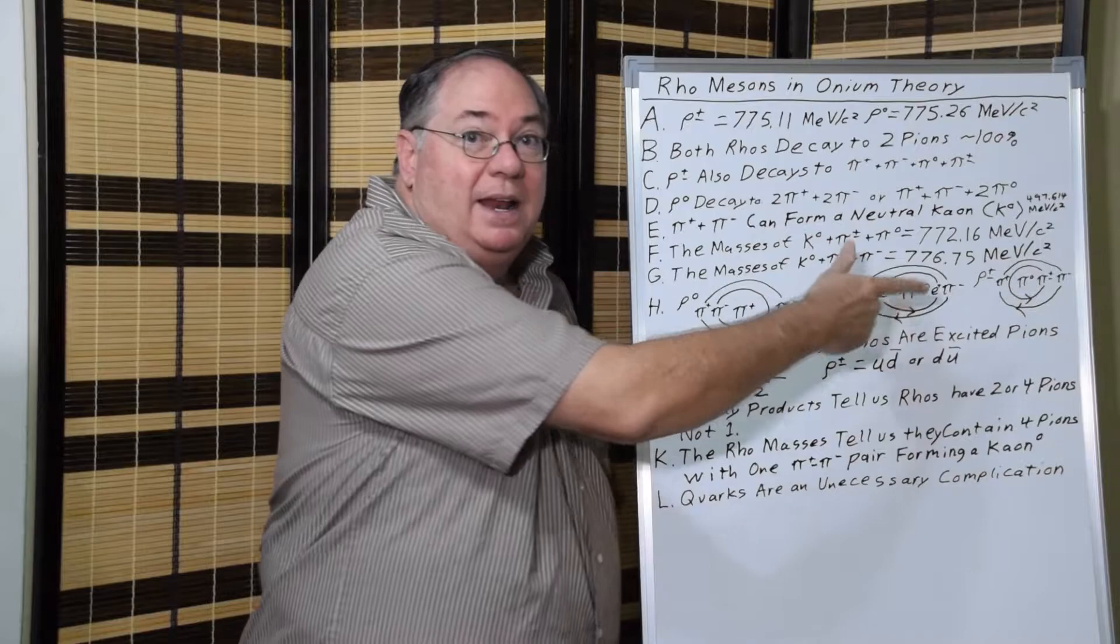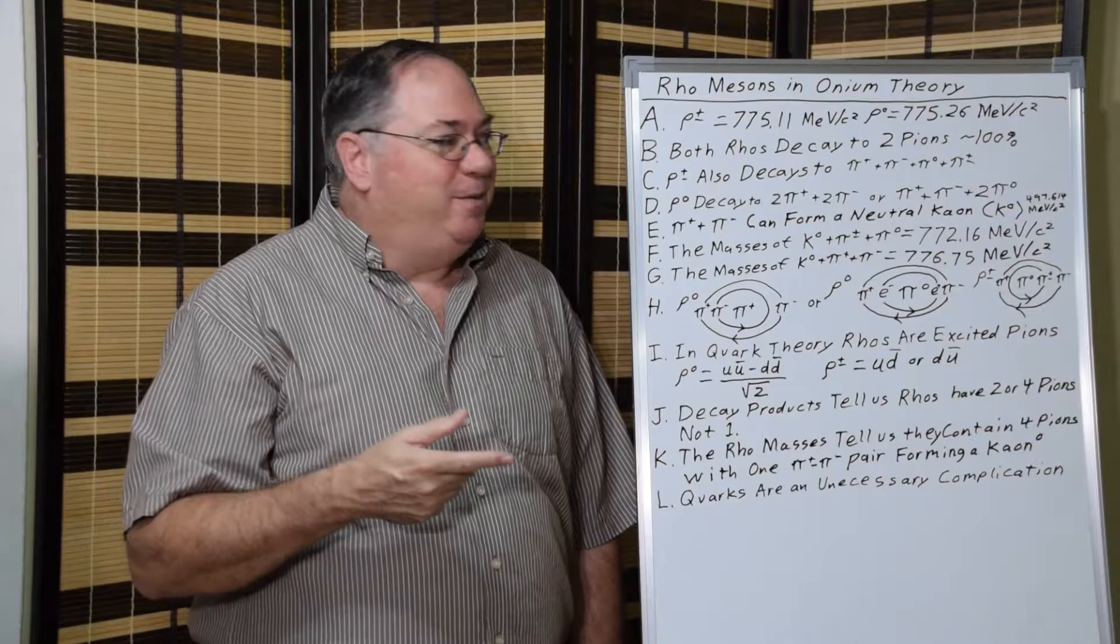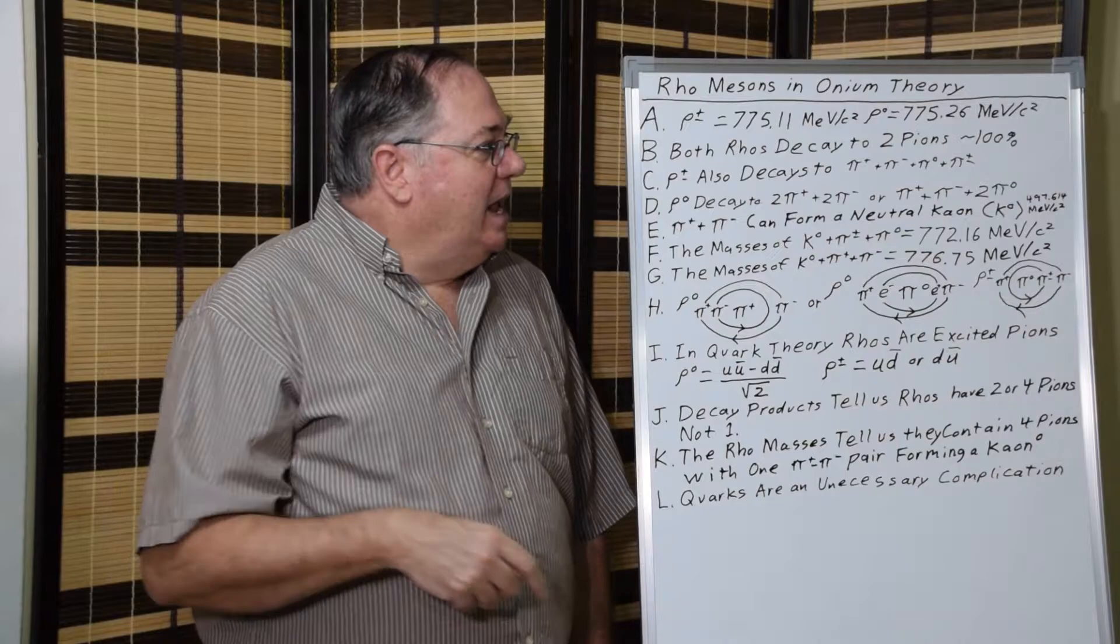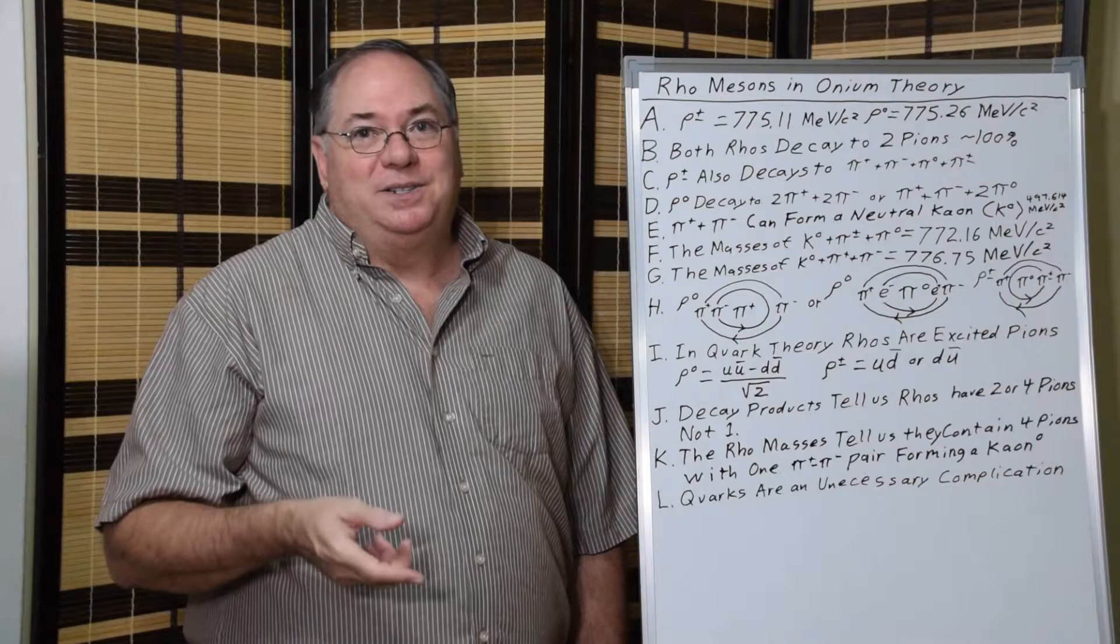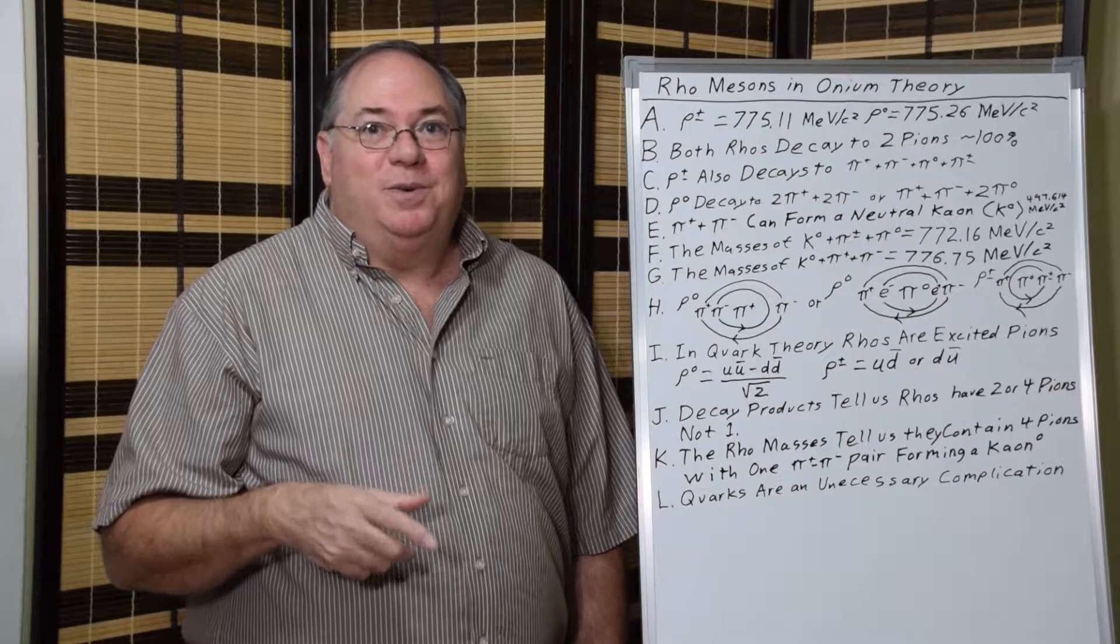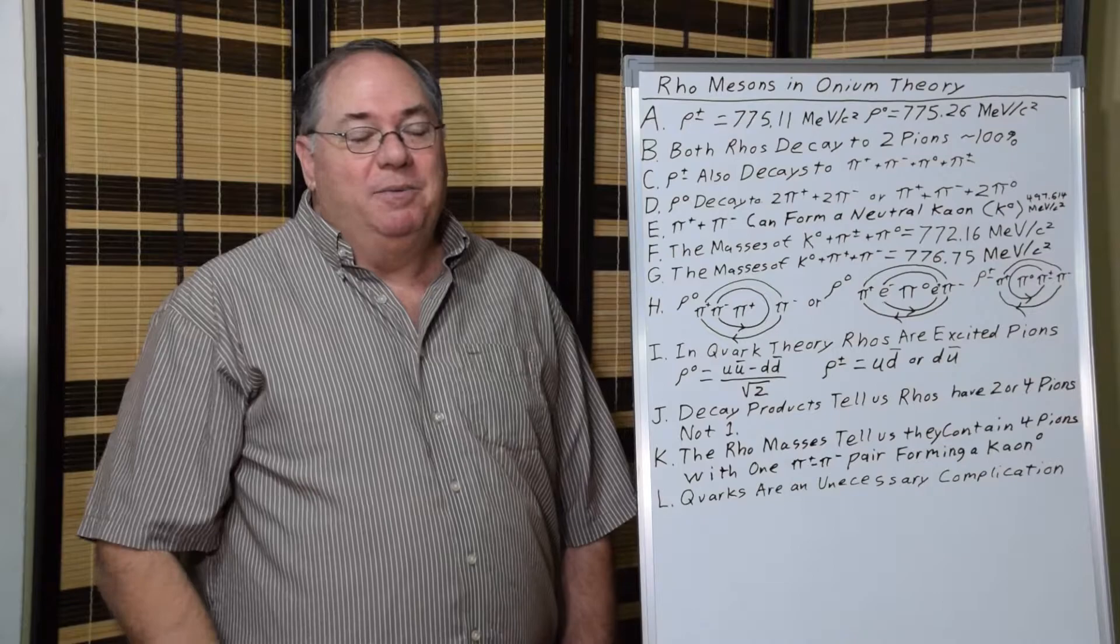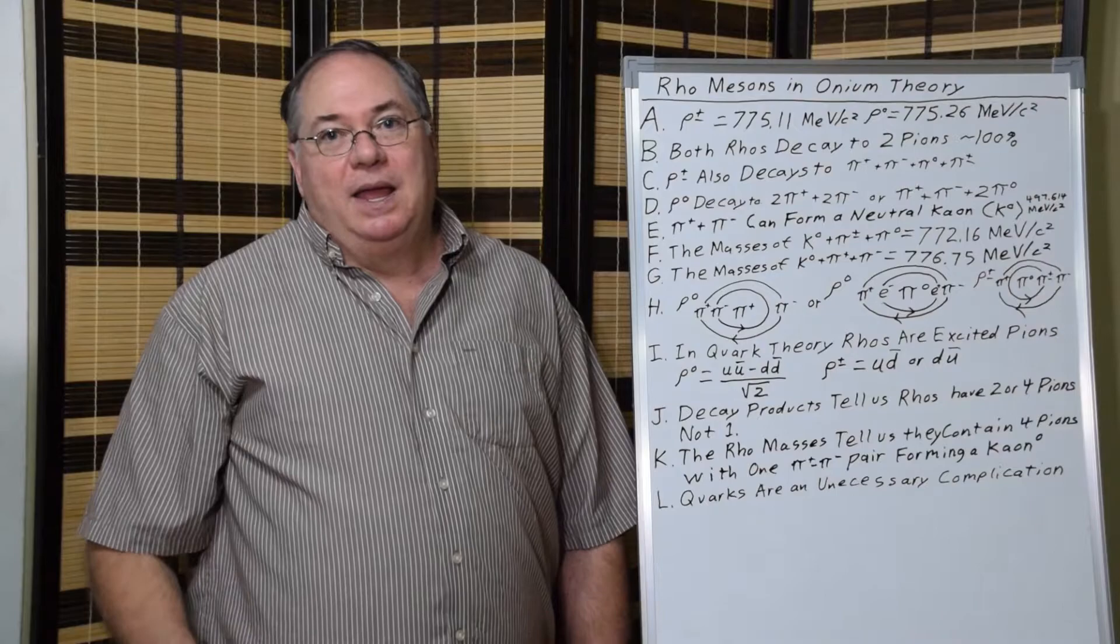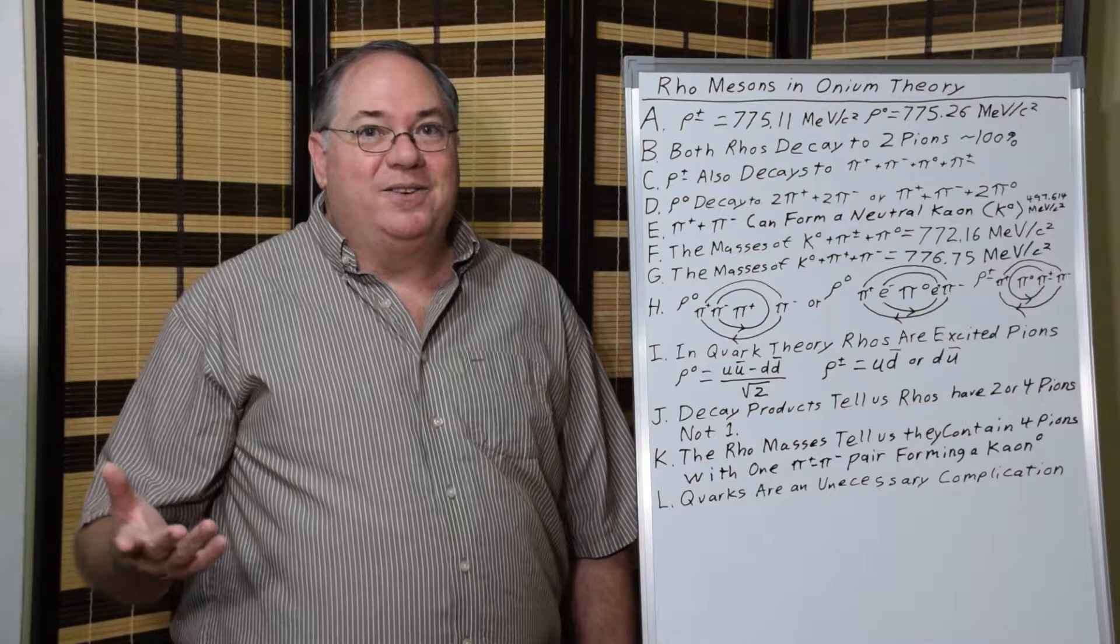We have a neutral pion orbited by an electron-positron pair, which equals another neutral pion, then orbited by another two-pion pair forming a neutral kaon. In the charged case, we just have a neutral pion in the middle orbited by a charged pion, orbited by two oppositely charged pions forming a kaon again. This is what it looks like in Onium theory: a simple model of basically three particles that are collocated or nested in their orbits. That gives us the proper mass and the decay products of the rho meson.